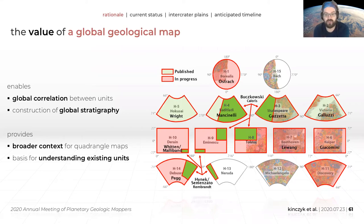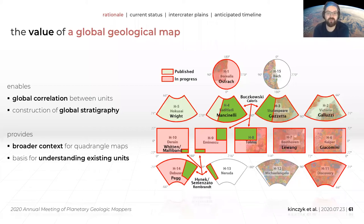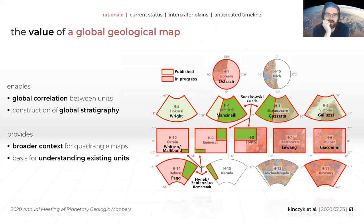The global time-stratigraphic series we have for Mercury was developed from Mariner 10. It's not necessarily clear we need a new one, but it's important to know that when that sequence was developed, we hadn't seen half the surface of Mercury — we didn't know about the Rembrandt Basin, for example, the second largest preserved impact basin on Mercury. So getting this global context is really going to help.